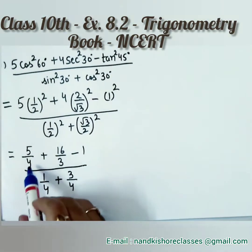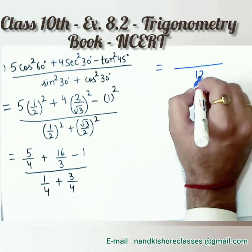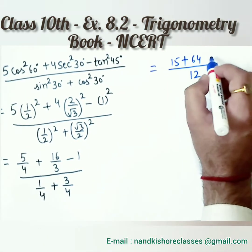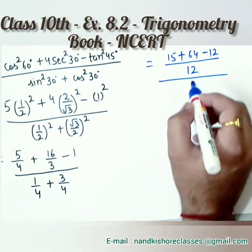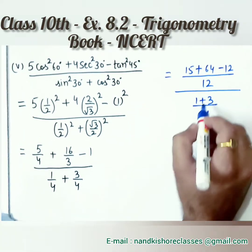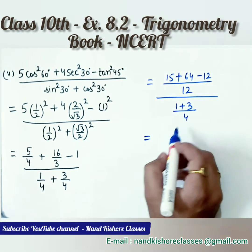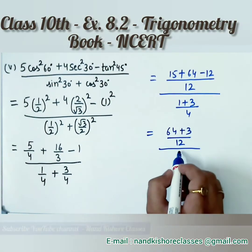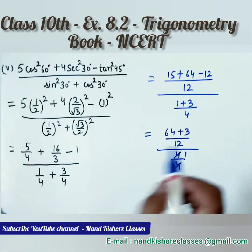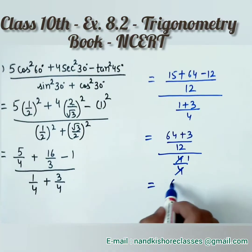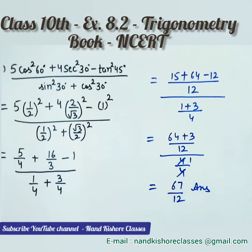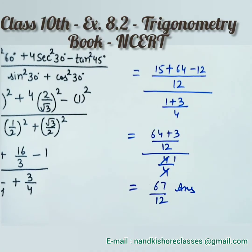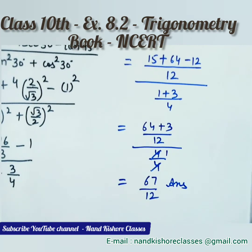Taking LCM 12 in the numerator: 5 times 3 is 15, 16 times 4 is 64, minus 12. So numerator is 15 + 64 − 12 = 67, over 12. The denominator is 1 by 4 plus 3 by 4 which equals 4 by 4 = 1. So the final answer for Part 5 is 67 by 12. We have now done all five parts of question number 1. The fourth part had slightly difficult calculation, but the exercise is very easy overall — just learn the values from the table.